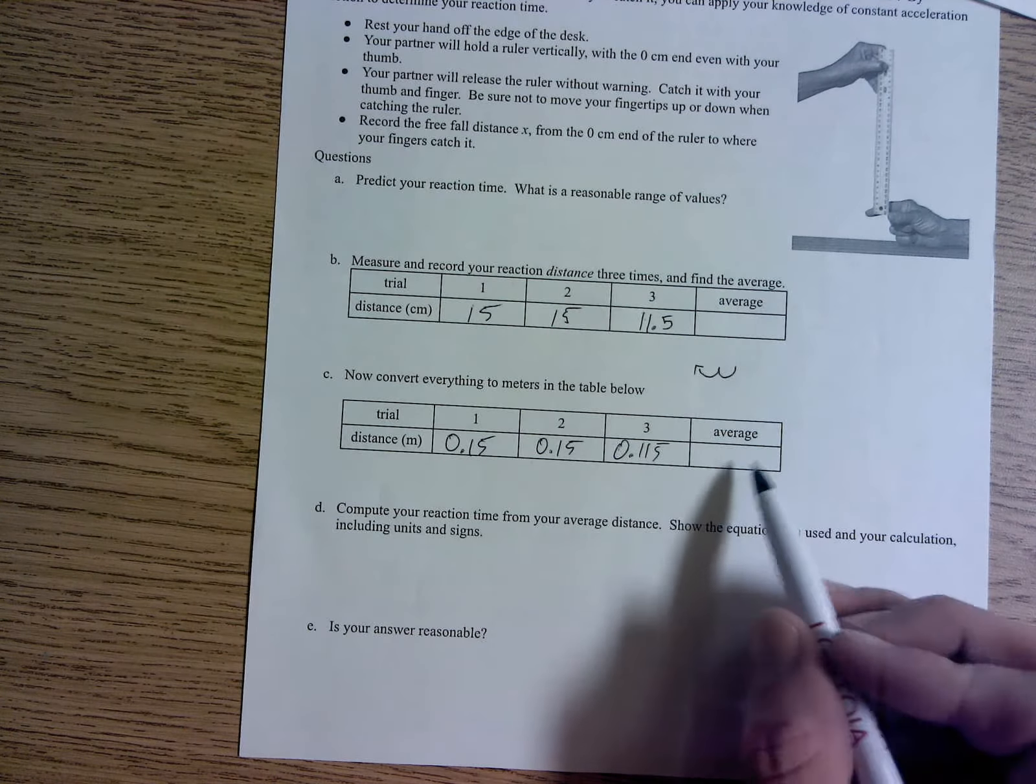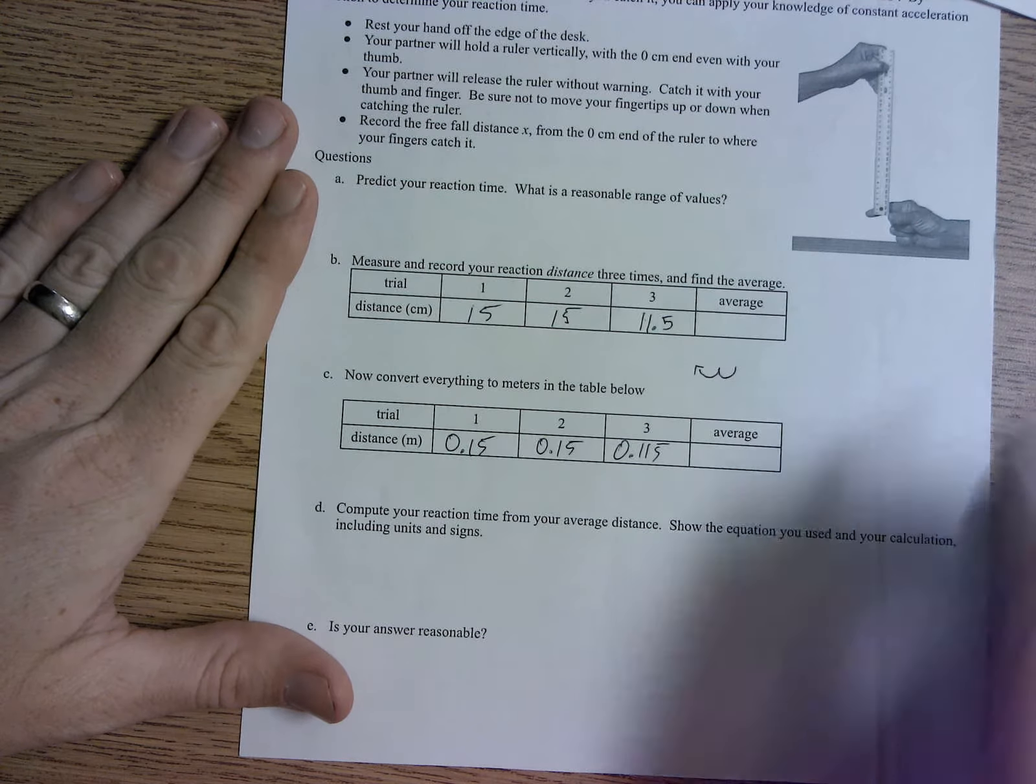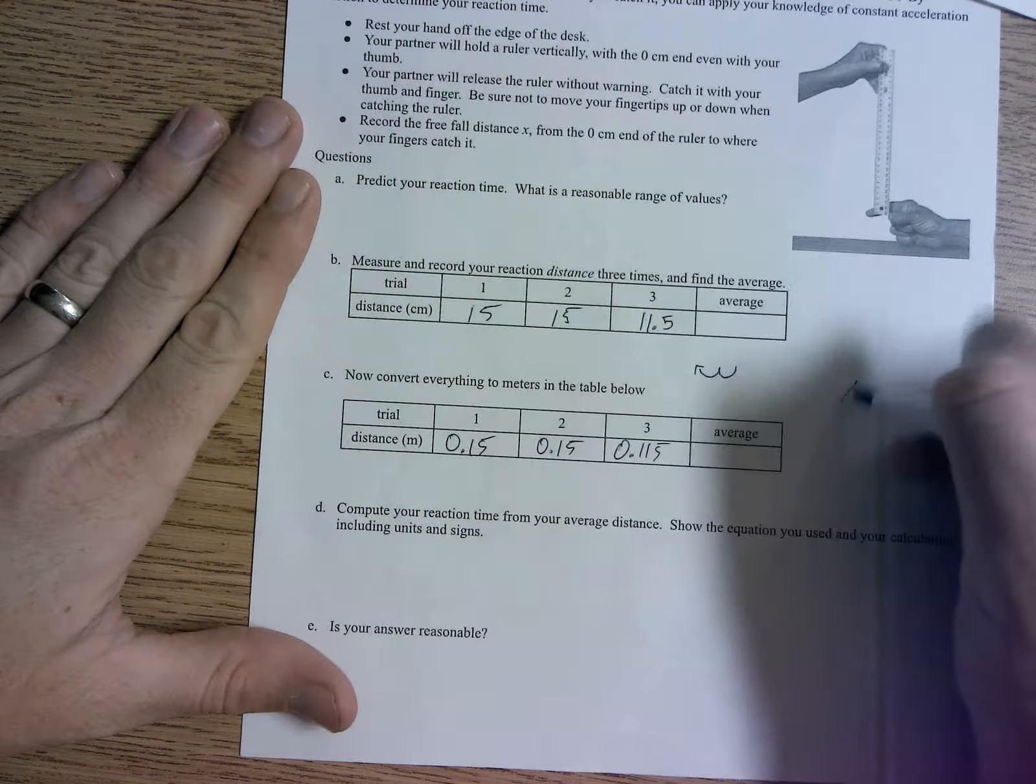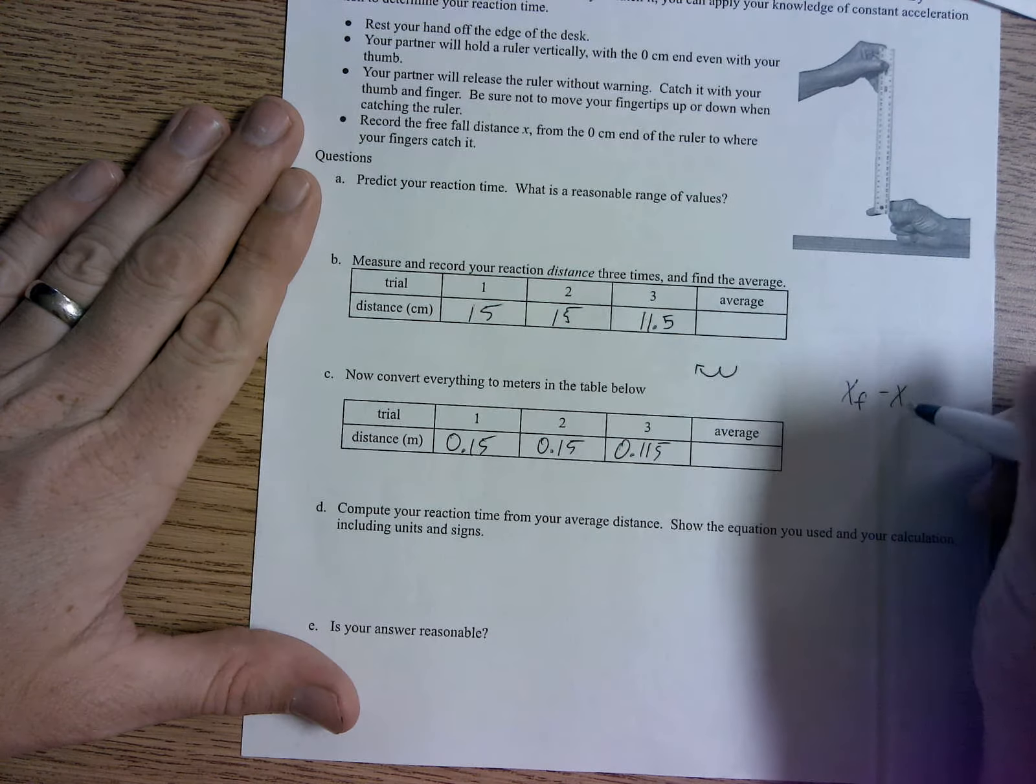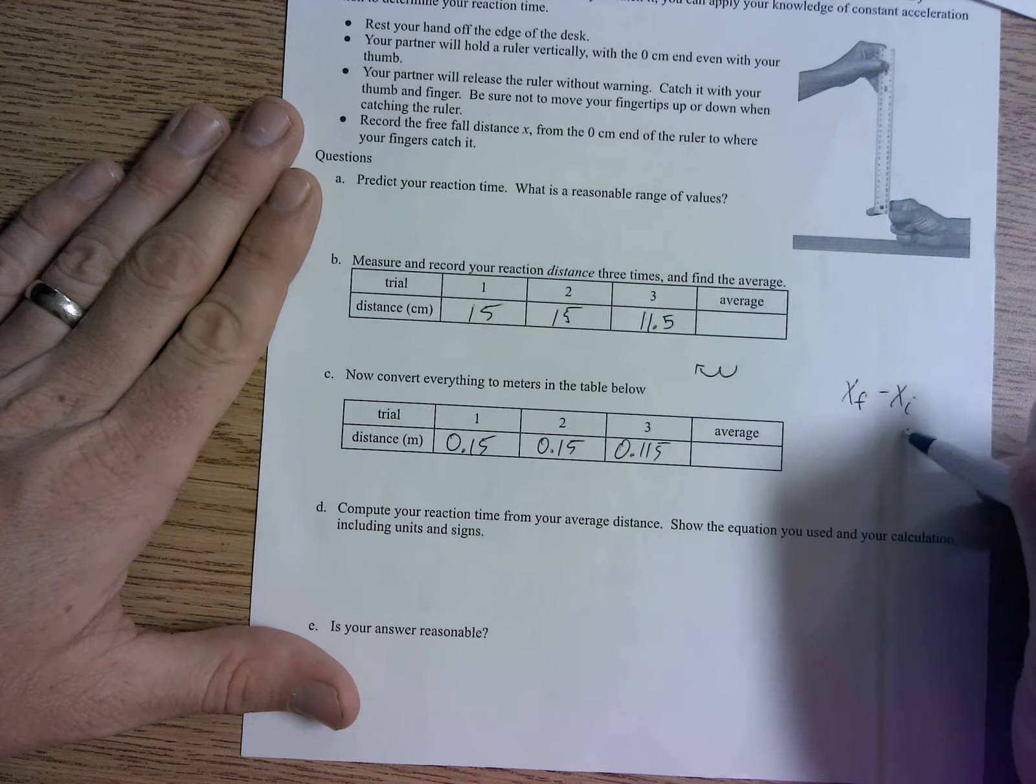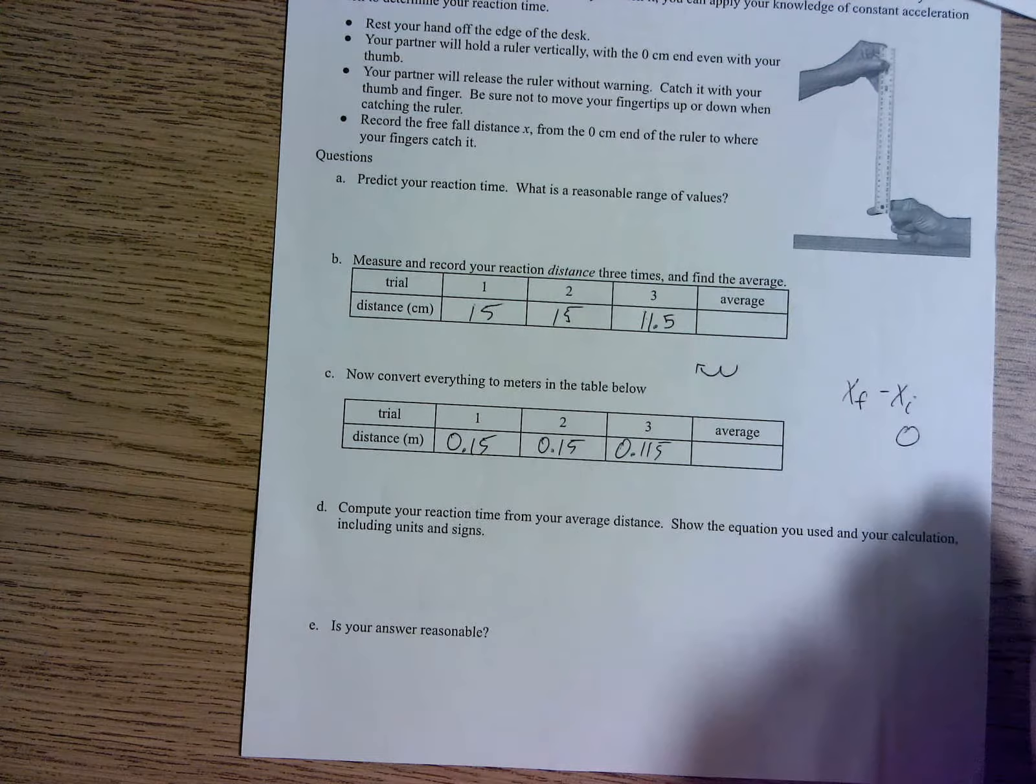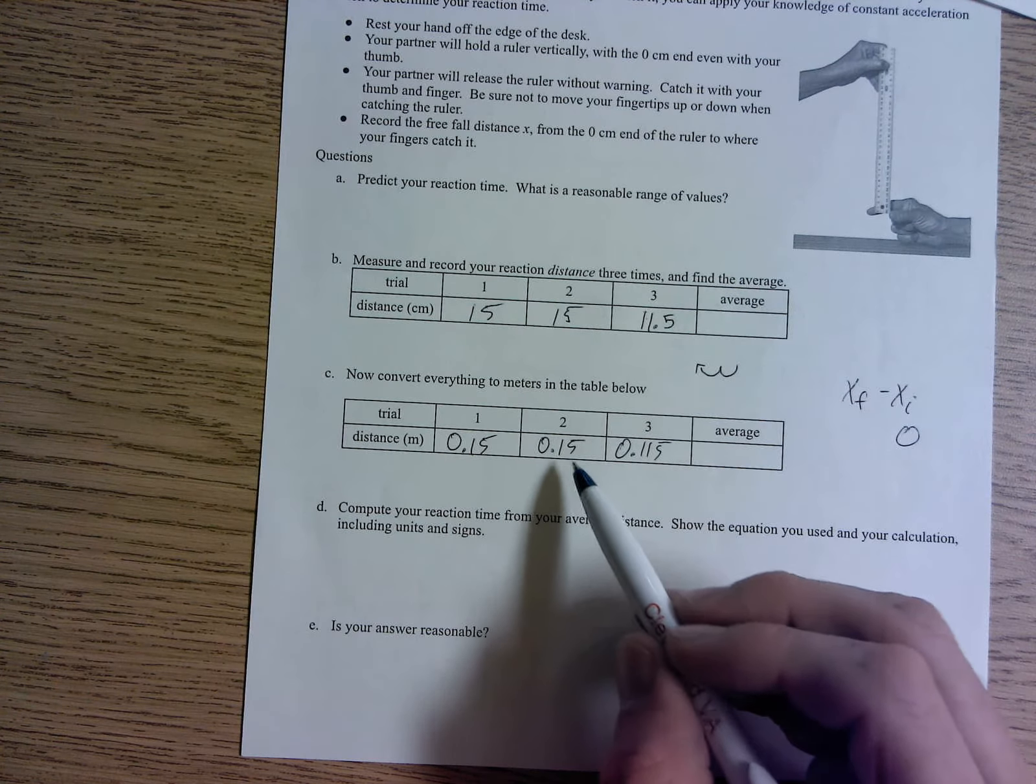Then you'll have your average. So that's going to be like your change in x, your x final minus your x initial. Remember that your x initial should have just been 0, right? And your x final is going to be a negative value of whatever you get here. So if it fell 0.15, then you'll put negative 0.15.